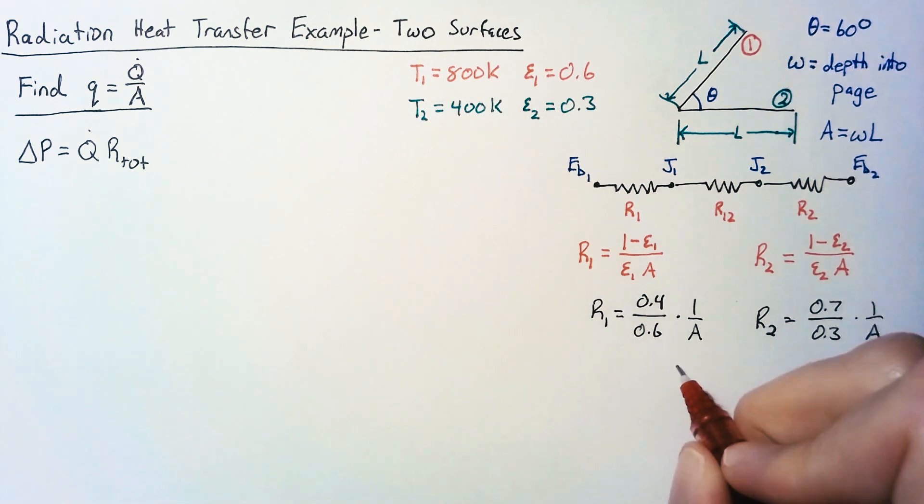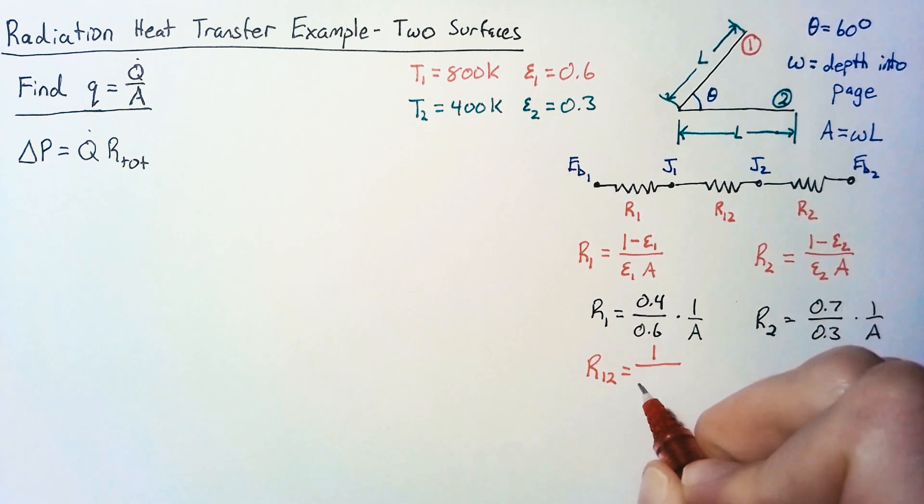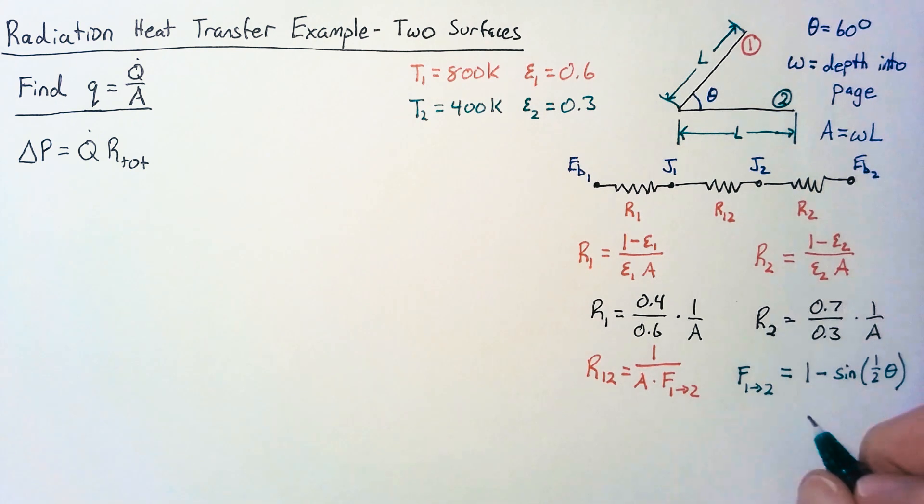This middle resistor is our space resistance. And that's just equal to 1 over A multiplied by the view factor. So here we need to go look up what the view factor is. And for this geometry, our view factor is equal to 1 minus sine of 1 half times theta. So plugging in theta here, we end up with sine of 30. Sine of 30 is 1 half. And so we end up with just a view factor of 0.5.